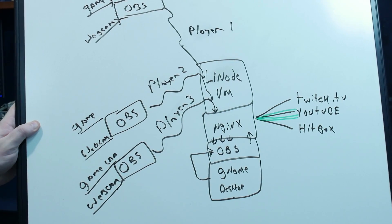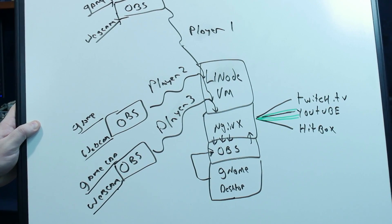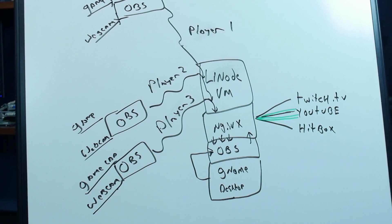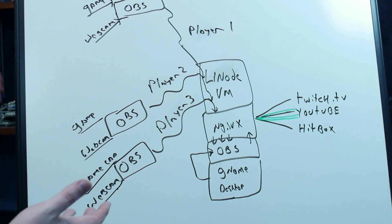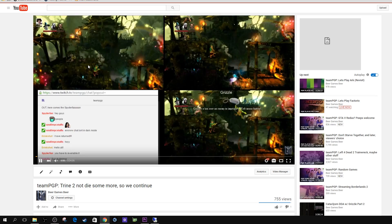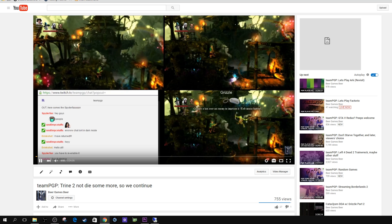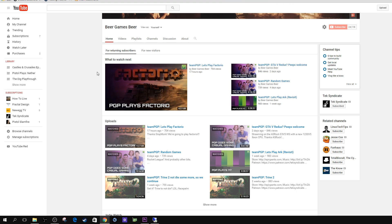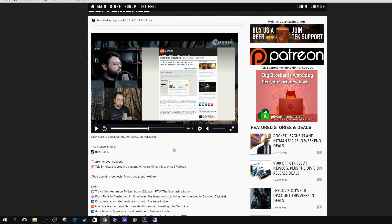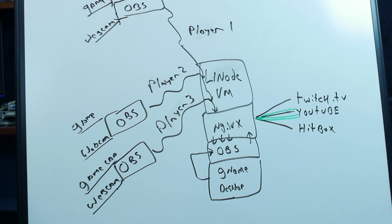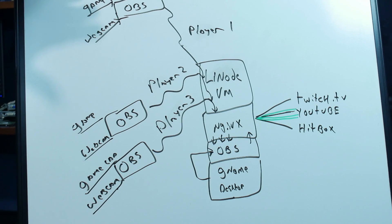On this channel, you won't see us using your Patreon dollars to put it toward fancy graphics - all you get is whiteboard. I've got Grizzle here who helped set up all this for the Team PGP game stream and some of the infrastructure that we use on the back end at TechSyndicate for video streaming. And this is the diagram we're going to use to explain how this setup works for game streaming.